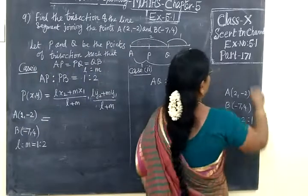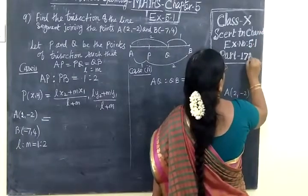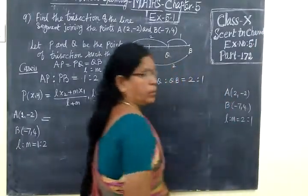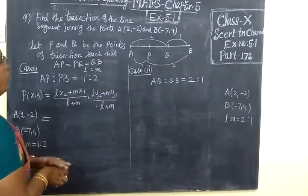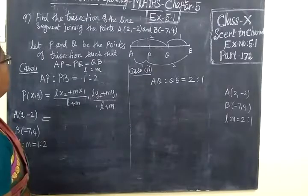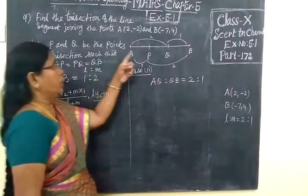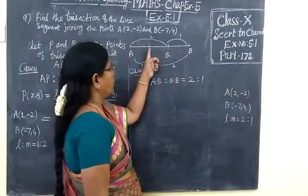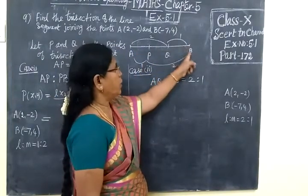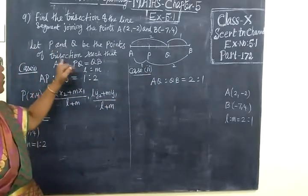Good morning to you all. Next slide is 5.1. We are going to see problem number 172. Last class we have seen A-section. Now we are going to see the trisection. Find the trisection of the line segment joining the point A and B. Trisection means 3 parts. So AP, PQ, then QB.